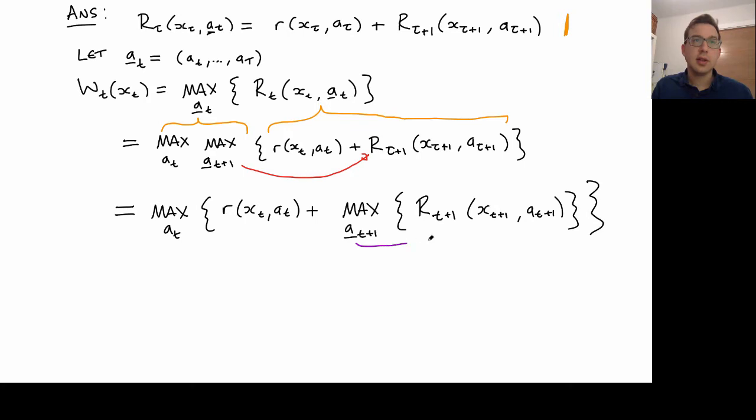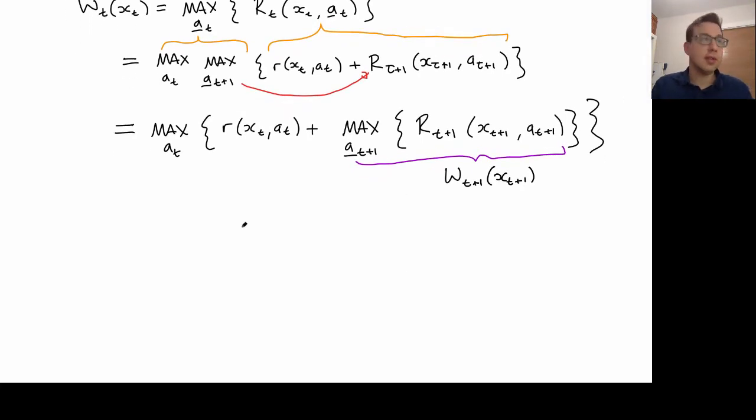So this guy here, it's really w t plus one time at state x of t plus one. So I then arrive at the expression that I wanted at the beginning, that this is the maximum over the action that I take next, plus the reward I get if I was to take the optimal action thereafter.